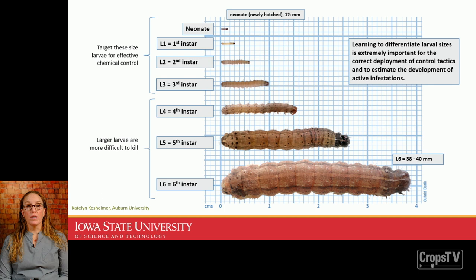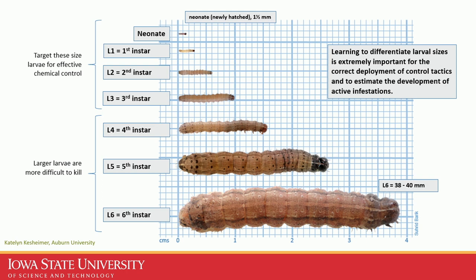This graphic from Auburn University shows the relative size of each instar. A neonate — a caterpillar just hatched from the egg — is just over a millimeter in length. As it progresses through six instars, it reaches about an inch and a half when fully developed right before pupation.